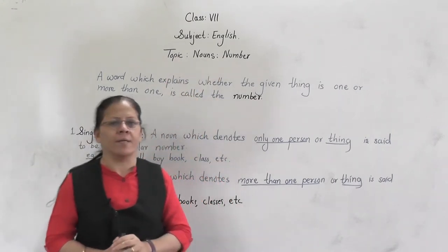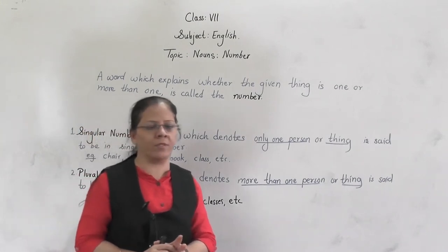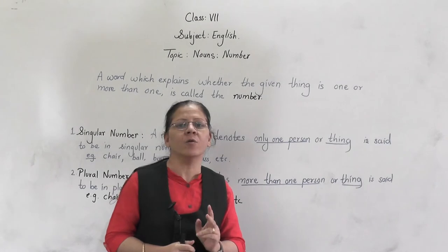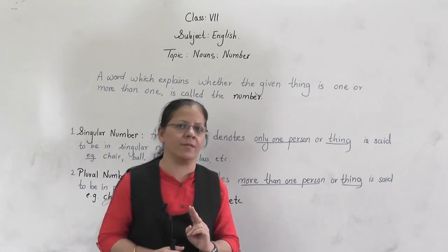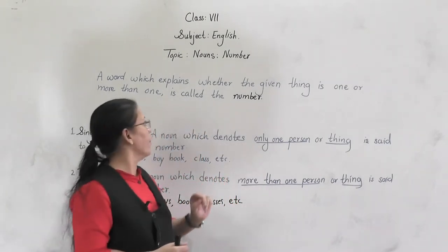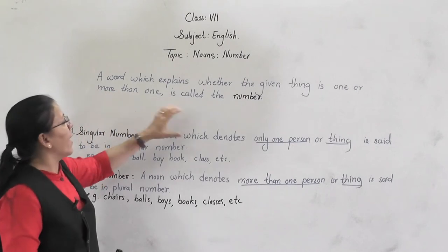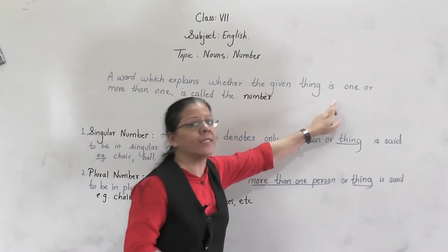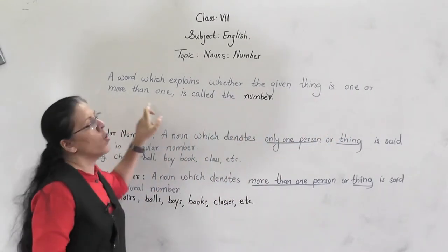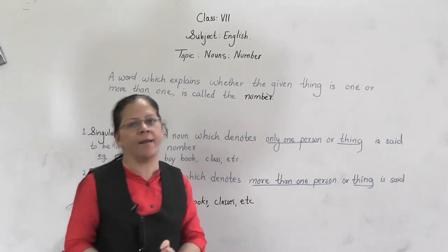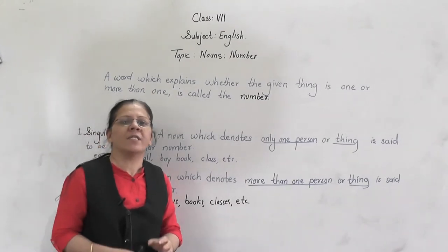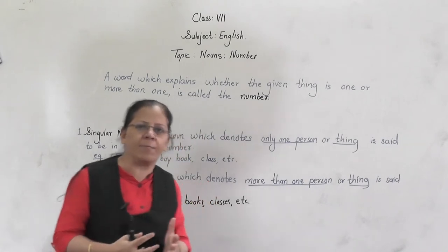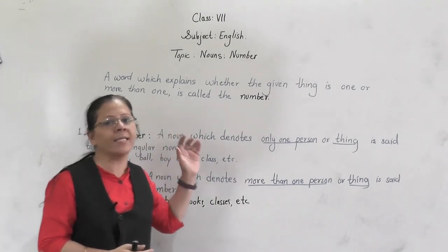Now, what is number? Number means count. In English language there are only two numbers. A word which explains whether the given thing is one or more than one is called number. So the word which explains whether a thing is one or more than one is called a number.